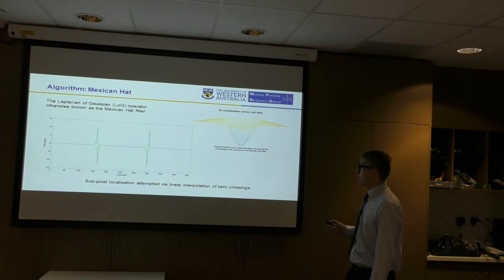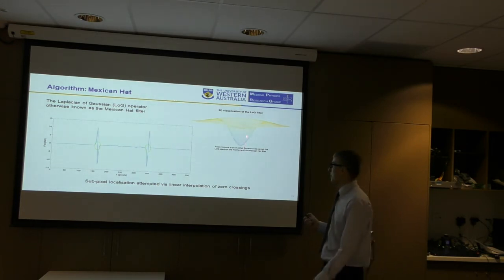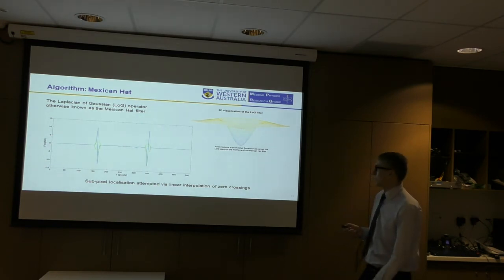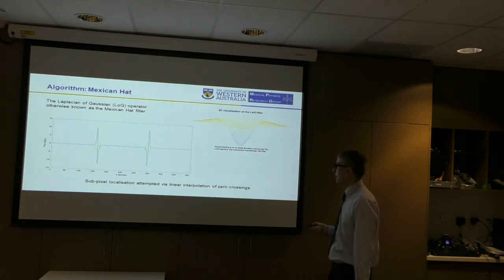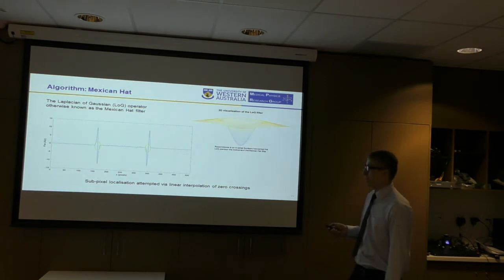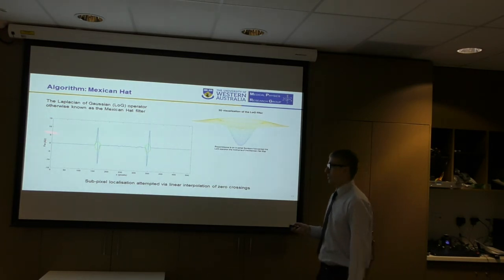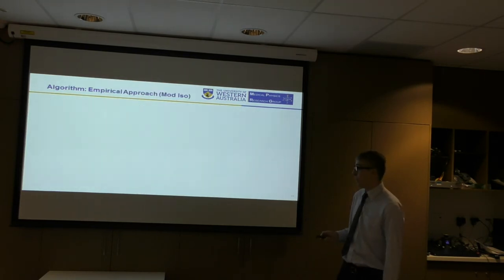The next algorithm, this one I wrote, but it's a generalized computer vision technique. It's a Laplacian of Gaussian operator. It's otherwise known as the Mexican hat filter, because supposedly it looks like an inverted sombrero, but I think some people have been looking at a computer screen for too long. So, it's another, it uses Laplacian, so you're getting second derivatives, and then you search for zero crossings in the second derivative, and then the bit that I added was to use linear interpolation to attempt to get sub-pixel precision.